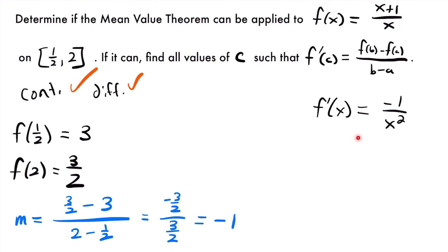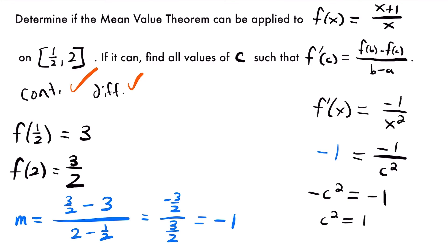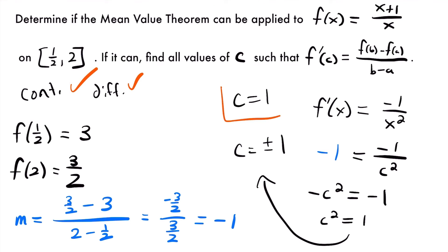Our slope is negative 1, so now we can set our derivative equal to that negative 1 and solve for values of c. We'll have negative 1 equals negative 1 over c squared. If we multiply both sides by c squared we'll have negative c squared equals negative 1. Then if we divide both sides by negative 1 we'll have c squared equals 1. Taking the square root of both sides we get c equals plus or minus 1. Now we need to check if both values of c are on our interval from 1 half to 2. Since the interval has only positive values, we don't need negative 1. So c equals 1 is our answer — the only value of c on this interval with the same slope as between our two endpoints.